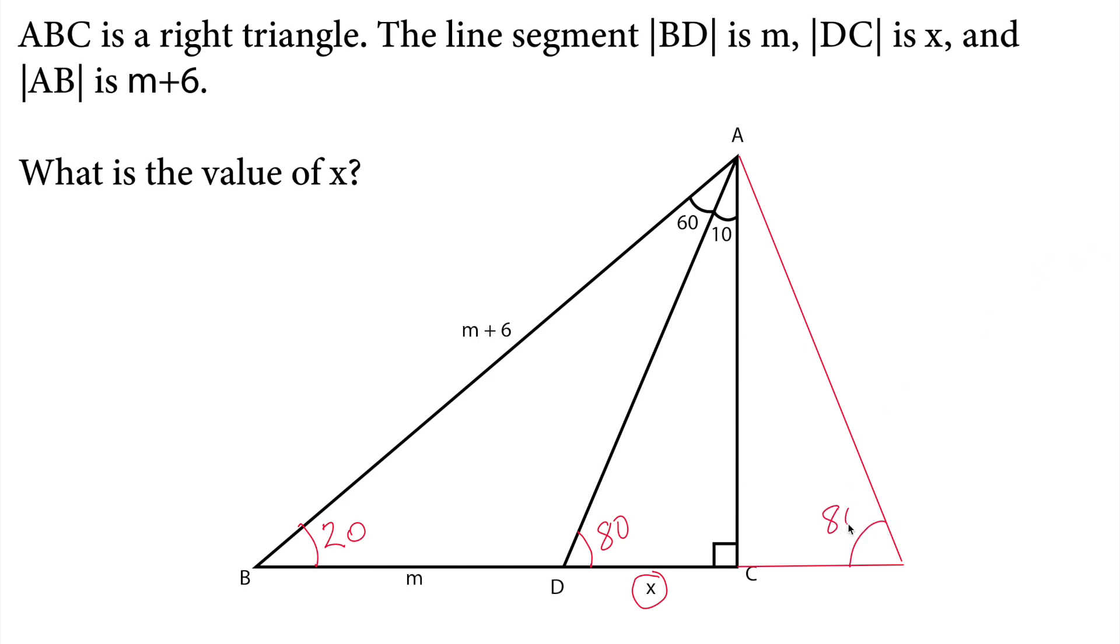So this should be also 80. This should be also equal to x. Why? Because if this is an angle bisector, an angle bisector divides the base into half. That line segment is perpendicular to the base. So therefore these are equal to each other, isosceles triangle.